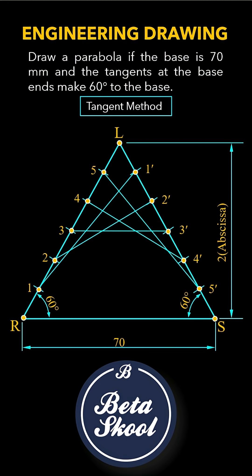These lines are the tangents to the parabolic curve. Mark points P1, P2, P3, P4 and P5 as shown in the animation.